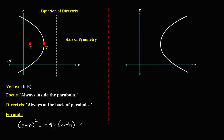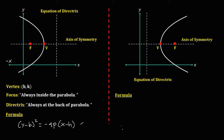If the parabola opens to the right, we have the vertex, the focus, the equation of the directrix, and the axis of symmetry. The formula is y minus k, squared, equals positive 4p times x minus h, since it opens on the positive x-axis. The same rule applies for p: it equals the distance from the focus to the vertex, or from the vertex to the directrix.